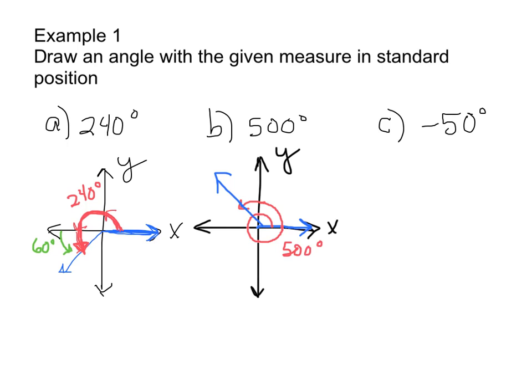We always draw how many degrees past the x-axis. It's only 50 degrees past the y-axis, but we never use the y-axis — we always use the x-axis. So how many degrees did I go around from the x-axis? On the first problem, I went 60 degrees past the x-axis going down. Here, I already went 360. How many degrees past 360 is 500? 500 minus 360 is 140. So the actual angle you drew is 140 degrees. It's confusing, but the more you practice the easier it will get.